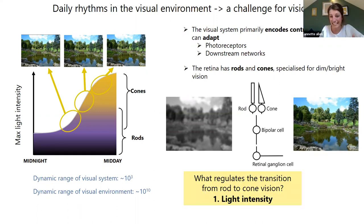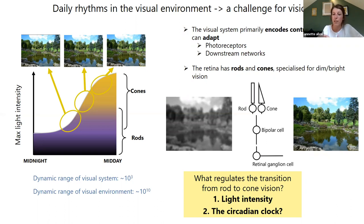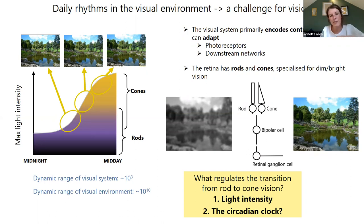What determines whether rods or cones are used for vision? The primary factor is the intensity of light. The range over which rods and cones are functional reflects their sensitivity range, and there are concurrent light-dependent changes in downstream circuits adjusted accordingly. But on top of this, there's a strong correlation with when rods and cones are used for vision according to time of day. Rods dominate vision at night where light intensity is very low, and cone photoreceptors are predominantly used in the daytime because at night light intensities don't reach their intensity range. Time of day information is represented in physiology by our circadian clock. My talk is focused on exploring the idea that the circadian clock is used by the visual system to regulate the balance of rod and cone visual function and also wider aspects of visual physiology.